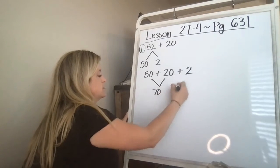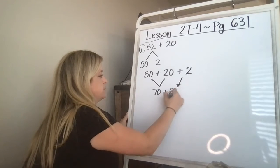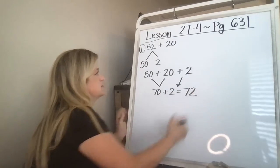So then it becomes the 2 drops down and it becomes 70 plus 2 which is 72.